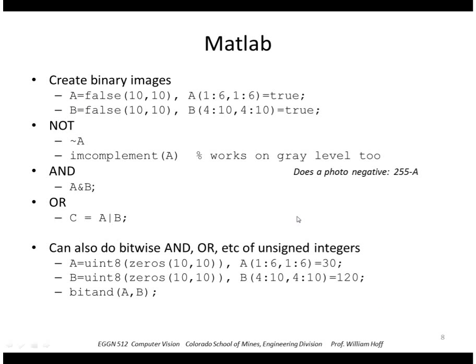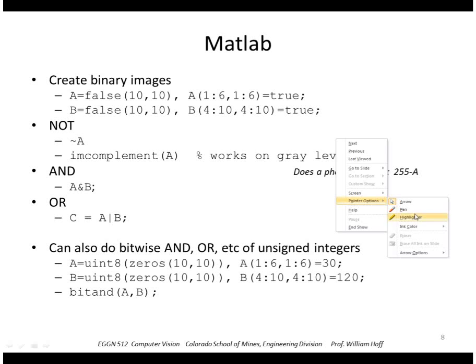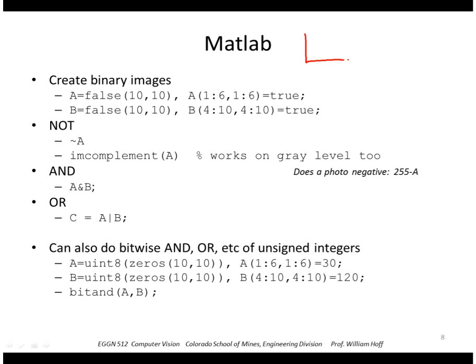In MATLAB, there is actually a logic type called true and false. So you can create an image of false using this command right here. This would create an image of false or zeros that is 10 by 10. And here I'm going to insert a region of 1s or trues in the upper left corner. And at image B, I would insert a region of trues in the lower right corner. So given that, let's say essentially this is A, which is the ones here, zeros here. And B is the ones here, zeros here.